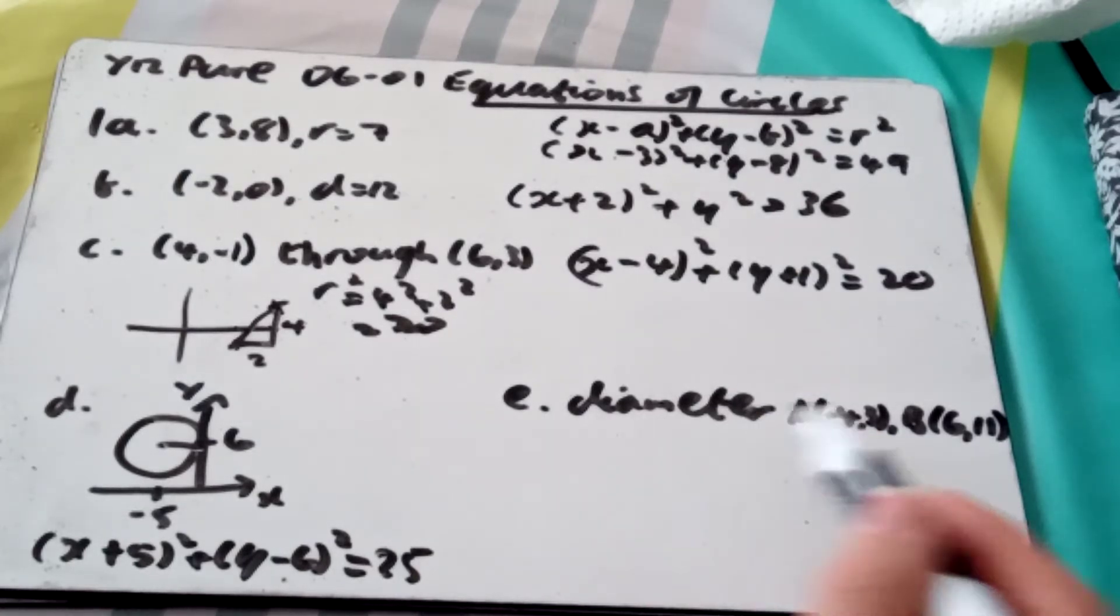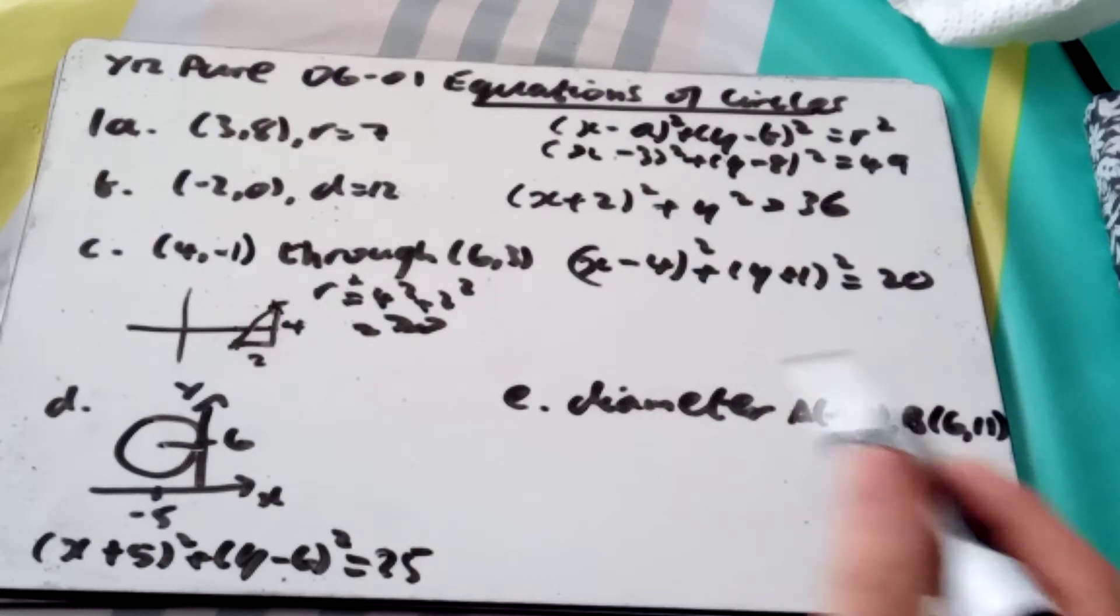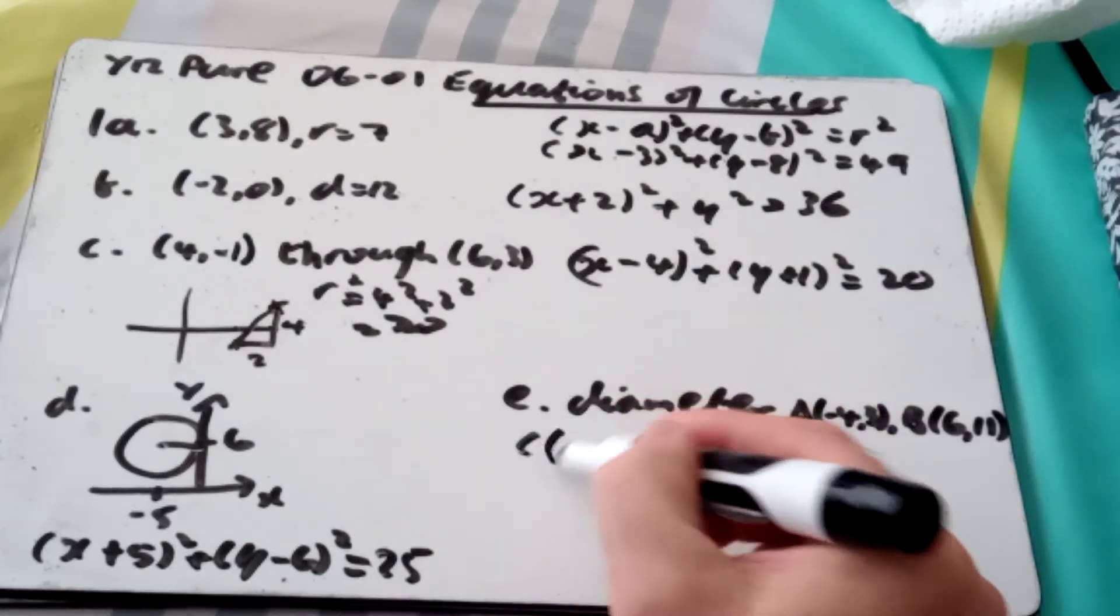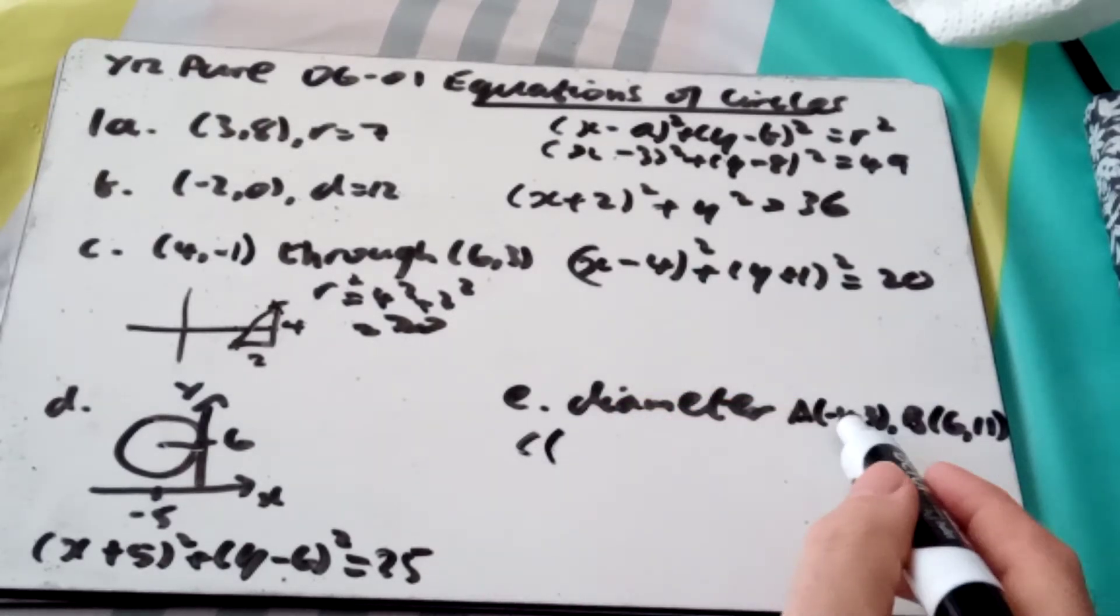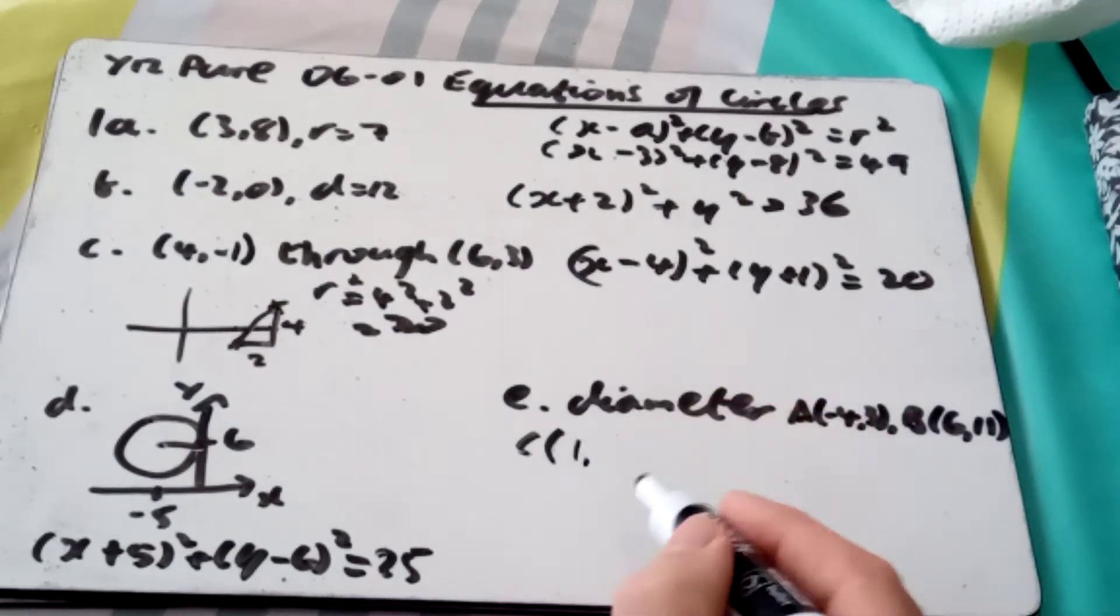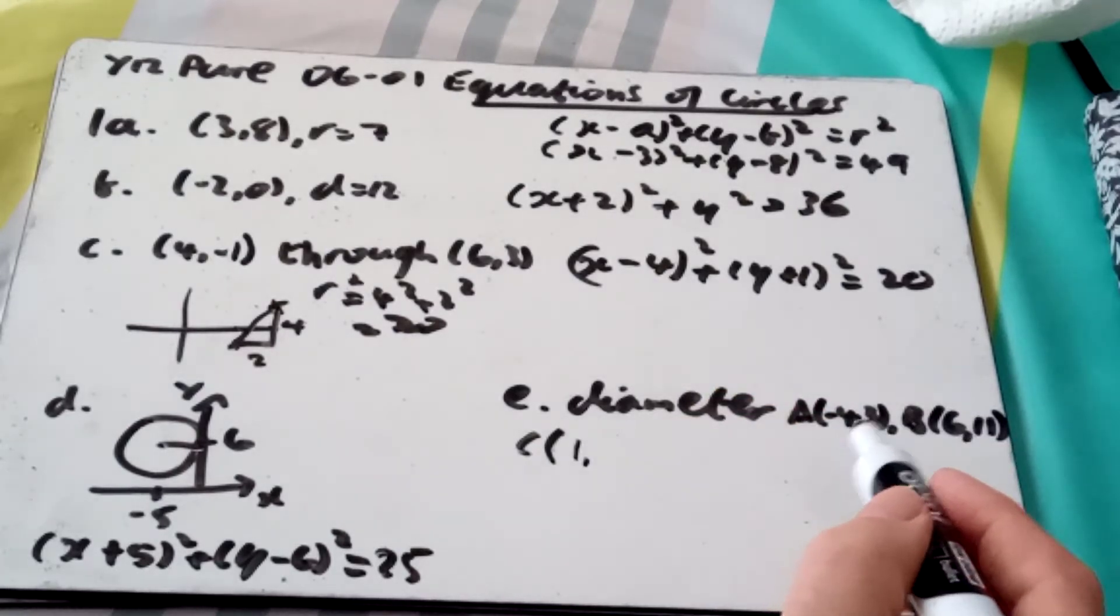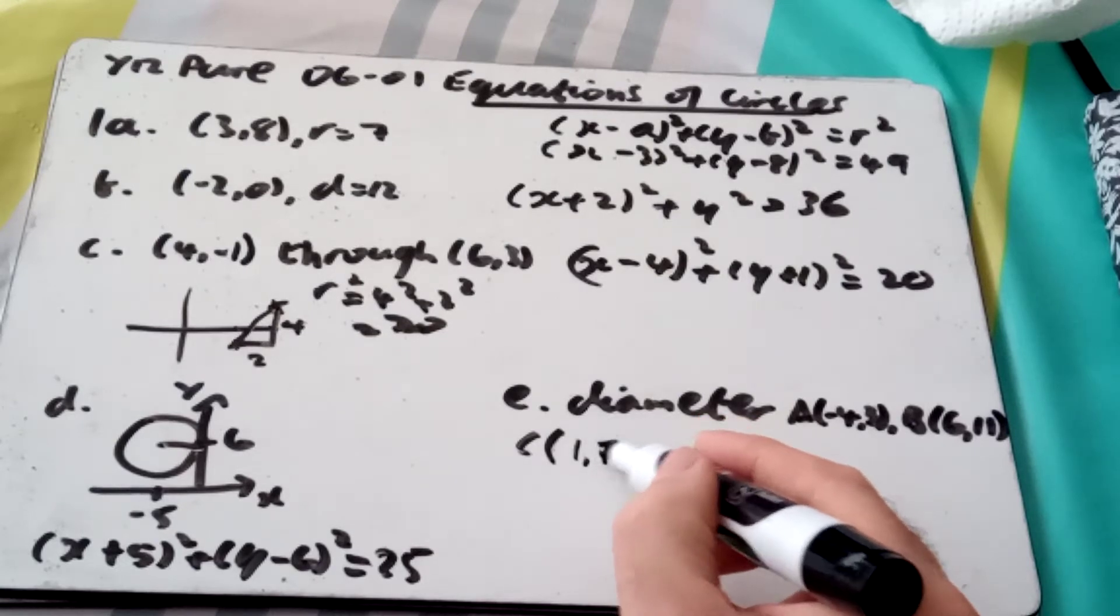E, we're actually given just the two endpoints of the diameter, (-4, 3) and (6, -11). So my center is halfway between, so it's the average of -4 and 6. 6 minus 4 is 2, divided by 2, 1. And 3 plus 11 is 14, divided by 2 is 7.